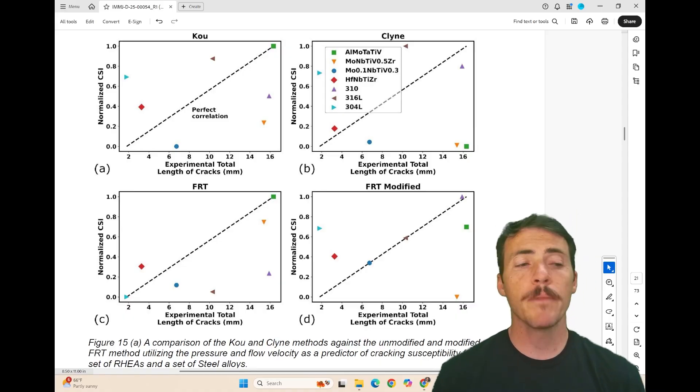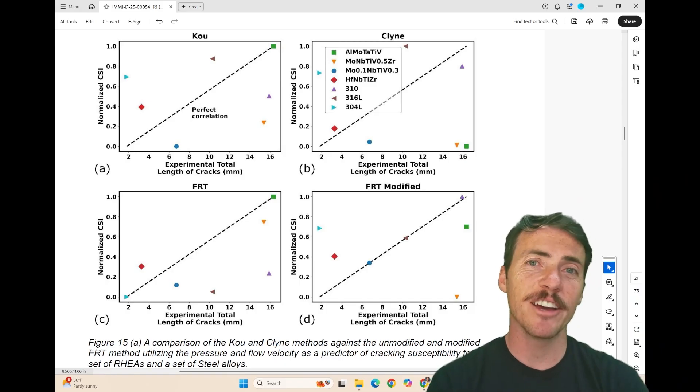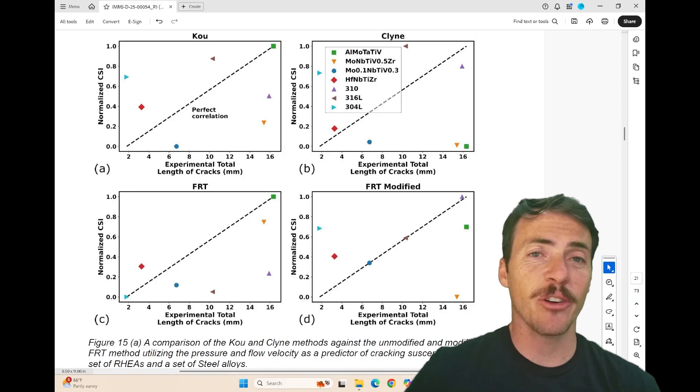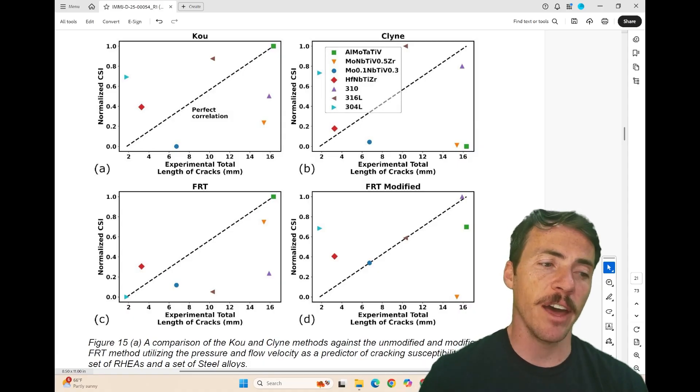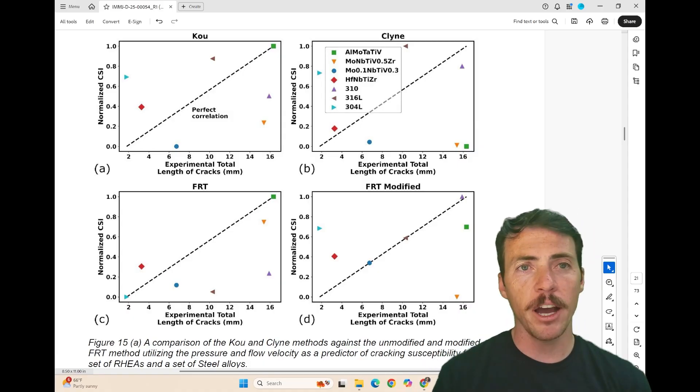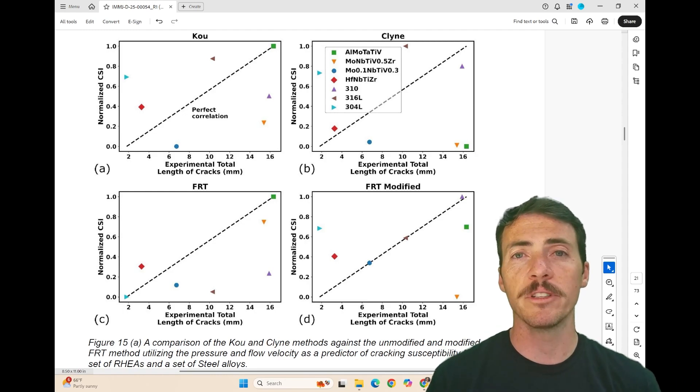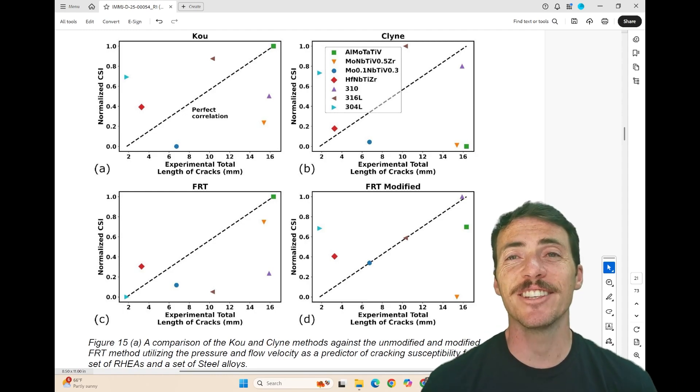So what's the bottom line here? There isn't yet a one-size-fits-all model for predicting hot cracking, unfortunately, but this does give evidence to the notion that incorporating the physics behind our simulations to tweak our models, accounting for, for example, solidification shrinkage, could help us better predict when and how cracks are going to form in a material. So check it out yourself in the latest issue of IMMI.